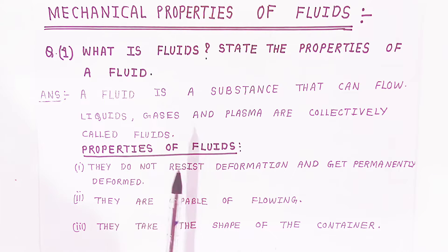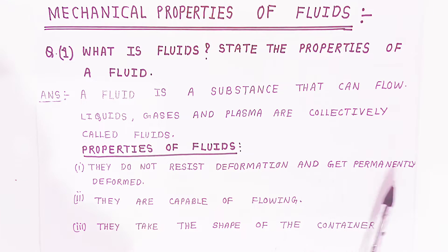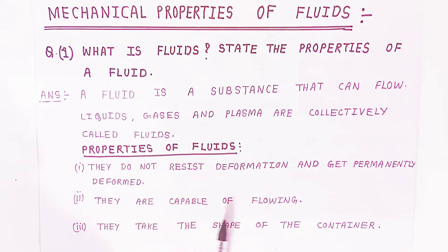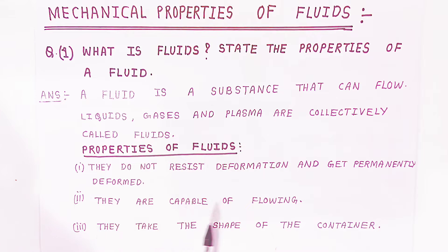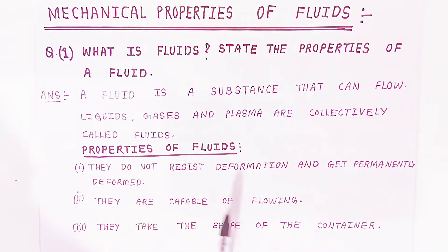Now what are the properties these fluids will have? First, they do not resist deformation and get permanently deformed. They are capable of flowing because liquids, gases, and plasma can flow. They take the shape of the container in which they are kept. So these are the simple properties of fluids.